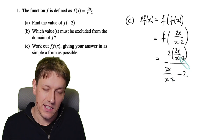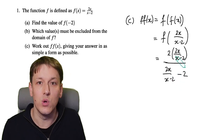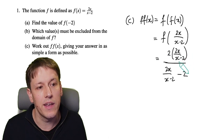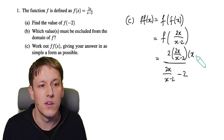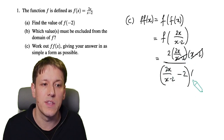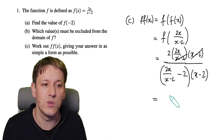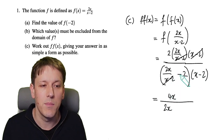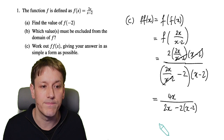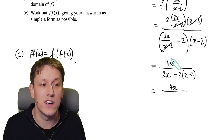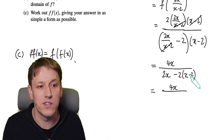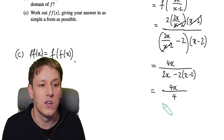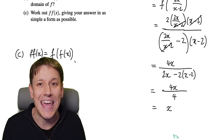The easiest way to deal with this is to take the denominator of the inside fraction, the (x - 2), and multiply top and bottom by it. Multiplying the top by (x - 2) cancels out that factor. On the top we get 2 × 2x = 4x. On the bottom, (x - 2) cancels the fraction part, but then we also have minus 2 × (x - 2). Simplifying the denominator: 2x - 2x cancels, and -2 × -2 = +4. So we get 4x / 4, which gives x as the final answer.